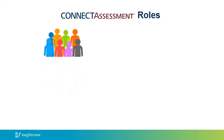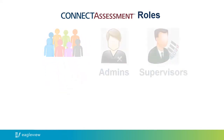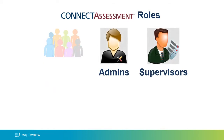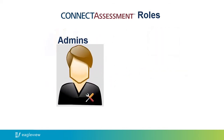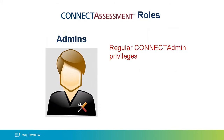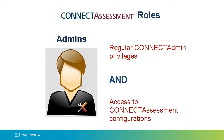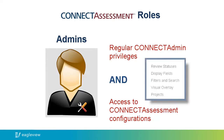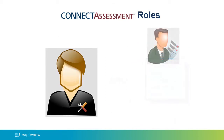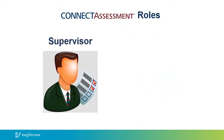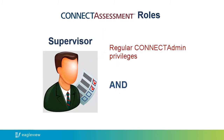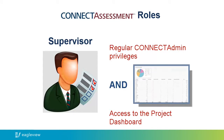The admin role can be subdivided into two types: Connect Assessment Admins and Connect Assessment Supervisors. A Connect Assessment Admin has regular Connect Admin privileges and access to the Connect Assessment configurations, such as setting review statuses, display fields, filters, searches, visual overlays, and projects. A Connect Assessment Supervisor has regular Connect Admin privileges and has access to the Project Dashboard, where the project is tracked and analyzed. A supervisor cannot alter the Connect Assessment configurations.